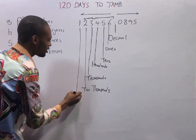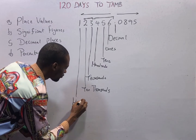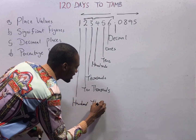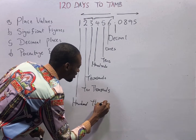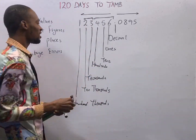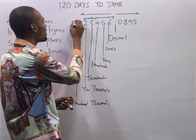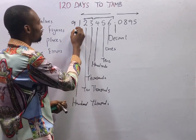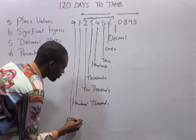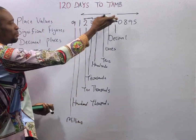Here is 100,000. If you have a next digit, the place value will be 1,000,000. Let's say you have 9 here — the place value will be 1,000,000, so the value of 9 is 9,000,000.